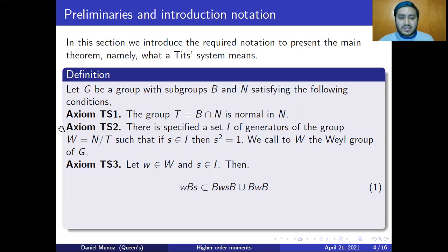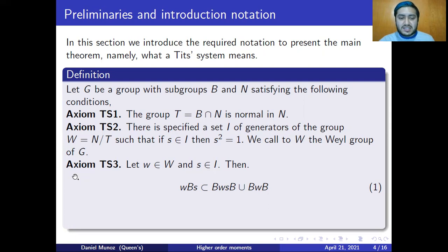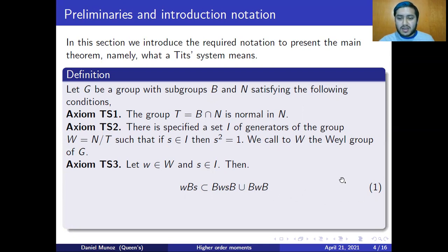Axiom TS2 says that there is a specific set of generators I of the Weyl group W, which is the quotient of N and T, such that if I take S in I, then S squared equals one. This W is called the Weyl group. Axiom TS3 says that if I take an element W in the Weyl group and S in the set of generators, then WBS is contained in BWSB union BWB. I'm going to call this inclusion equation one.